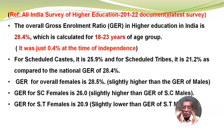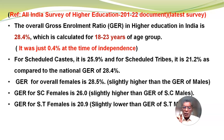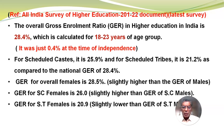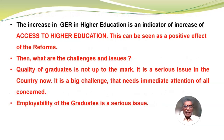Please note that GER was just 0.4% at the time of independence, but now during 2021-22 it is 28.4%. For Scheduled Castes, it is 25.9% and for Scheduled Tribes it is 21.2%, as compared to the national GER of 28.4%. GER for overall females is 28.5%, slightly higher than GER of males. GER for SC females is 26.0%, slightly higher than GER of SC males. The increase in GER in higher education is an indicator of increased access and can be seen as a positive effect of reforms.